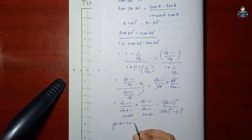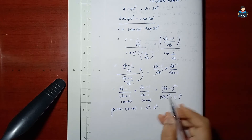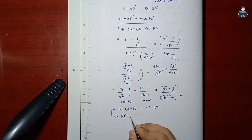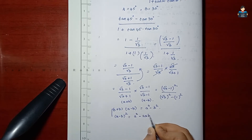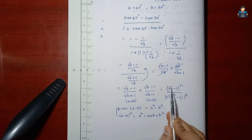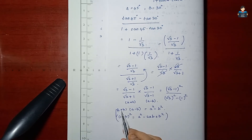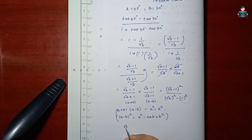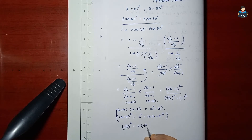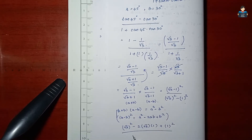We expand using the formula a minus b whole square equals a square minus 2ab plus b square. In the numerator we get root 3 whole square minus 2 into root 3 into 1 plus 1 squared. In the denominator we use a square minus b square, giving root 3 whole square minus 1 whole square, which equals 3 minus 1 equals 2.